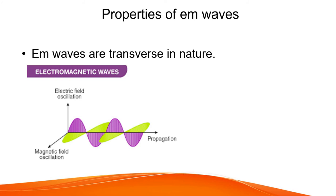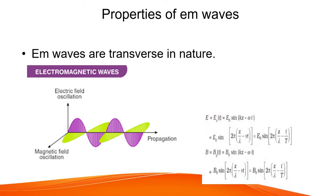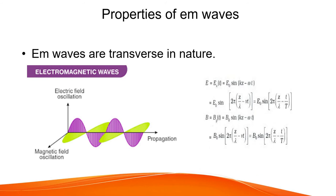Mathematically, if the wave propagates along the z-direction with the electric field vector along the x-direction, the expression is: Ex = E₀ sin(kz − ωt). Using k = 2π/λ and ω = 2πν, this becomes E = E₀ sin(2π(z/λ − νt)), or equivalently E = E₀ sin(2π(z/λ − t/T)), where T is the time period.